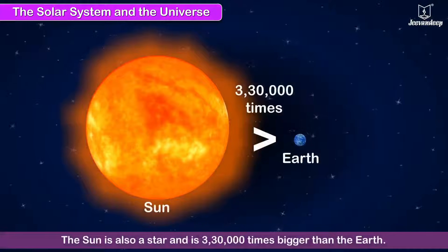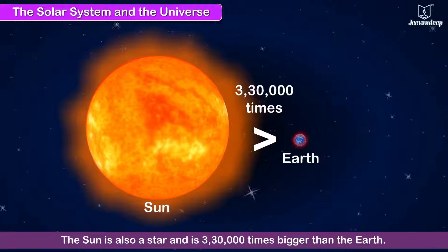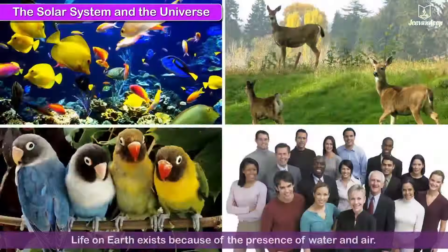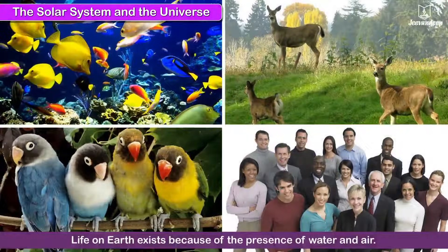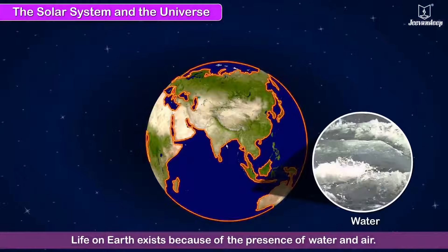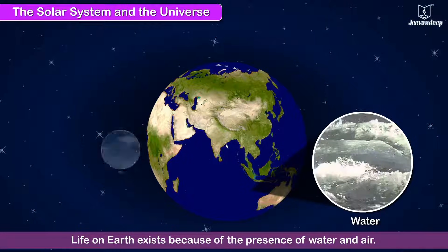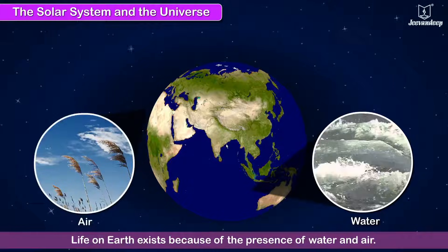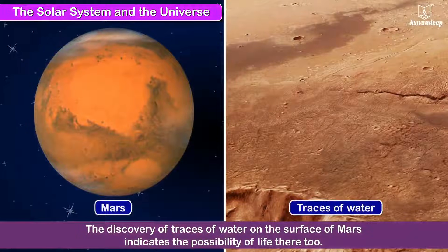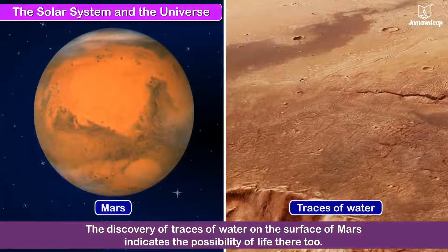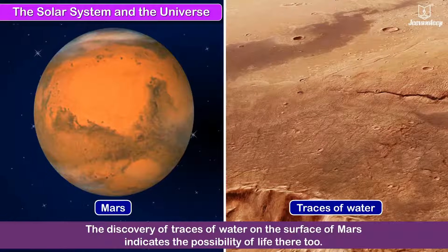The Sun is also a star and is 330,000 times bigger than the Earth. Life on Earth exists because of the presence of water and air. The discovery of traces of water on the surface of Mars indicates the possibility of life there too.